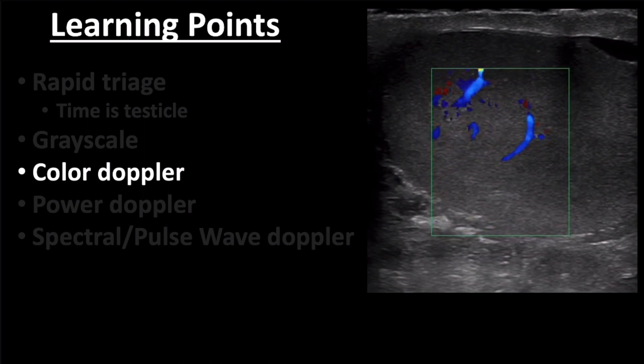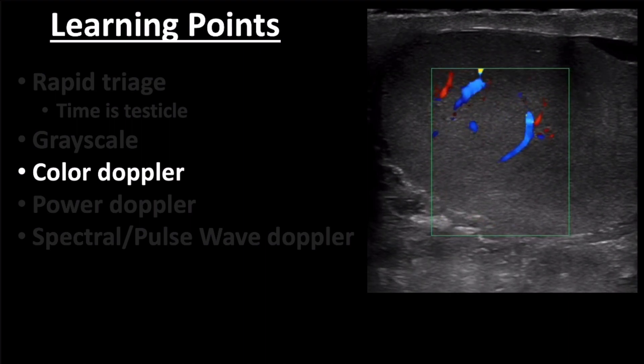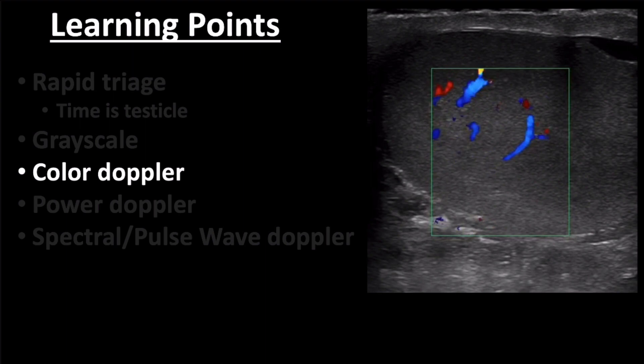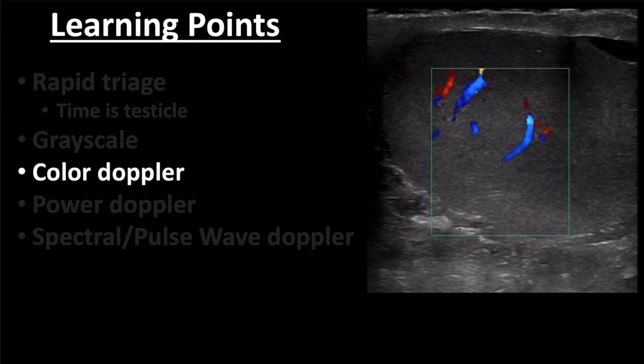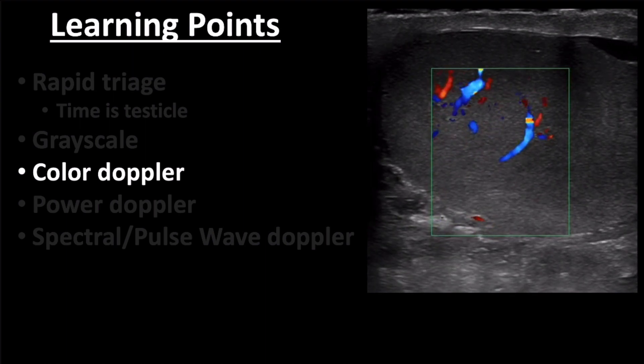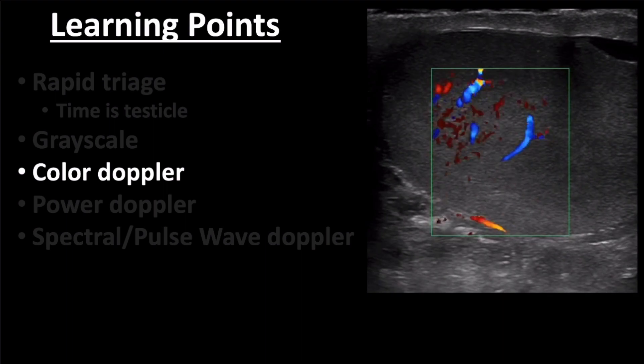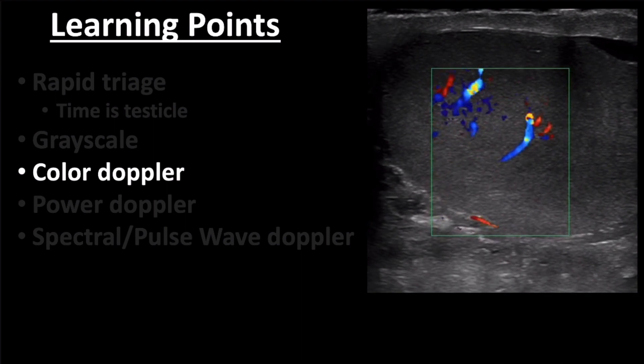The performance of color Doppler is operator dependent and I recommend scanning the unaffected testicle first in order to optimize scale and gain to visualize the most blood flow without artifact. This simple step should give you more confidence either the presence or absence of flow in the affected testicle.